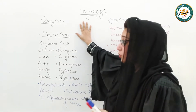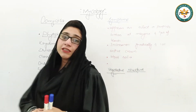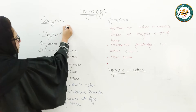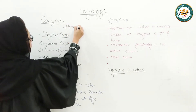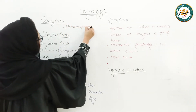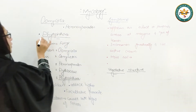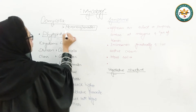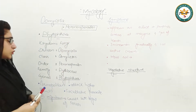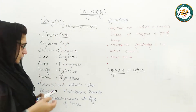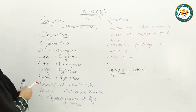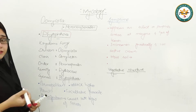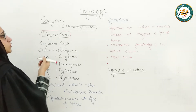We will discuss Division Oomycota, and what we will discuss in this order is Peronosporales. If we talk about Peronosporales, in your outline there will be a genus to discuss. What we will discuss in this genus is Phytophthora. Phytophthora is a disease-causing agent, a disease-causing fungi.